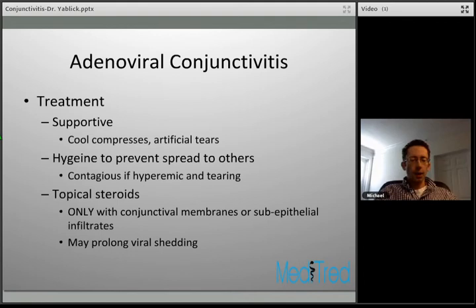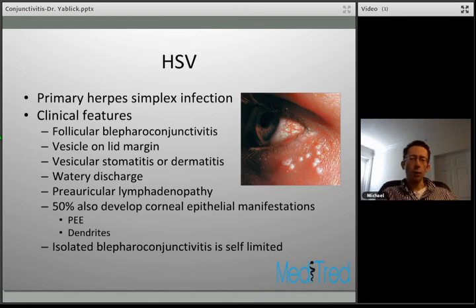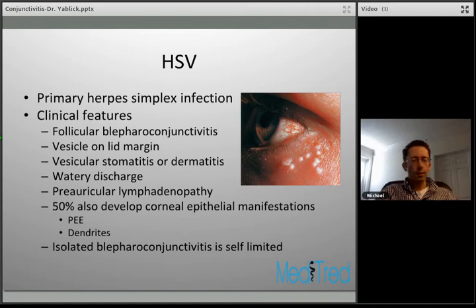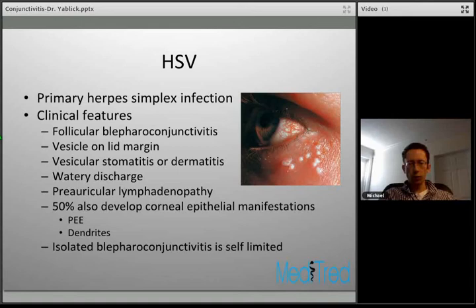Herpes simplex virus can also cause a follicular conjunctivitis, typically seen in primary HSV infection. If you have a dermatitis or blepharoconjunctivitis with vesicular lesions present on the lid margin, viral particles can access the conjunctiva and form a follicular reaction. There is often coexistent vesicular stomatitis or dermatitis, watery discharge, and preauricular lymphadenopathy. 50% of patients with blepharoconjunctivitis can develop corneal manifestations such as punctate erosions and dendrites. Isolated blepharoconjunctivitis is self-limited, so supportive measures are appropriate.